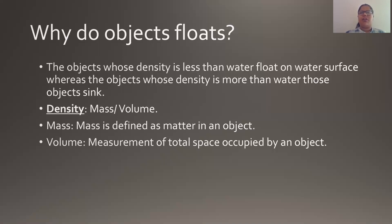Now one question might hit your brain: why does a ship sail? How does it sail on the surface of water, because ships are very heavy — heavier than stones? These ships are made and designed in such a way that they can easily float on the surface of water. The design and the physics behind it allows the ship to sail on the water, and that is why the ship does not sink and can float easily on the surface.